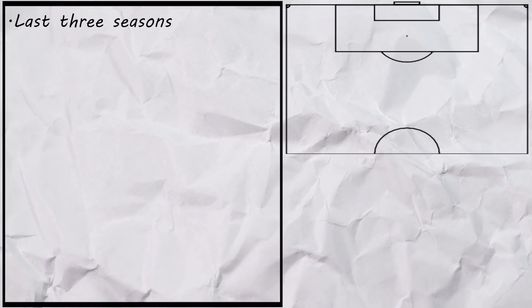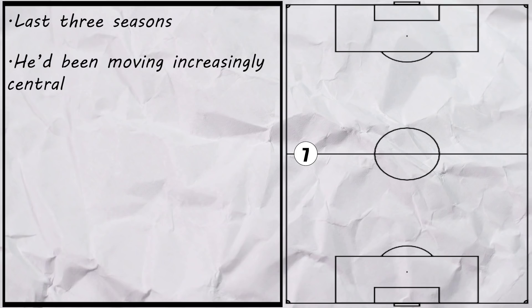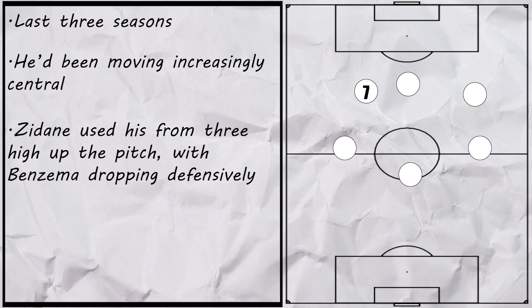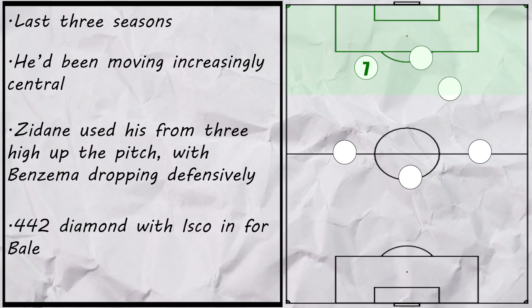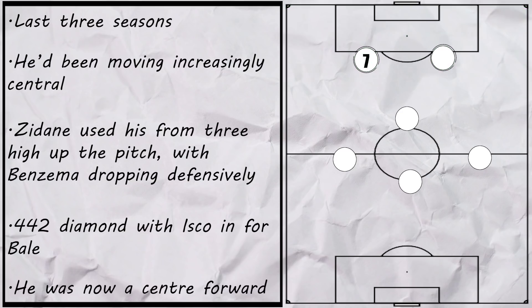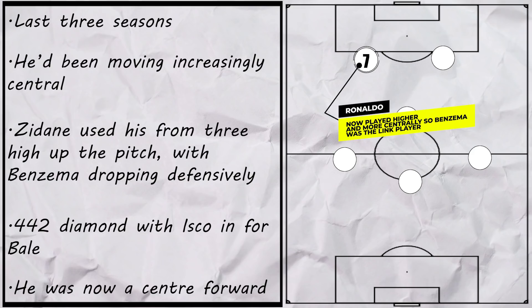When assessing his impact, we'll focus on his last three seasons. Tactically, it's well known that in the last few seasons he's been drifting more central and higher up the pitch. In the first season under Zidane, the front three operated extremely high up the pitch, and Benzema would be the player who would usually drop back in the defensive phase. In Zidane's final season, he moved towards a pure 4-4-2 diamond, with Ronaldo and Benzema being their exclusive forwards. But the bottom line is, Ronaldo was now taking up the higher position centrally and Benzema was more of a link player.